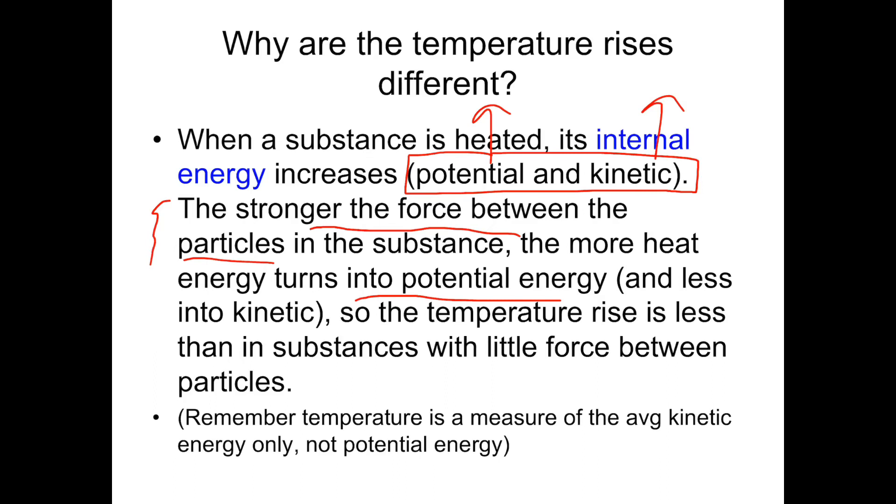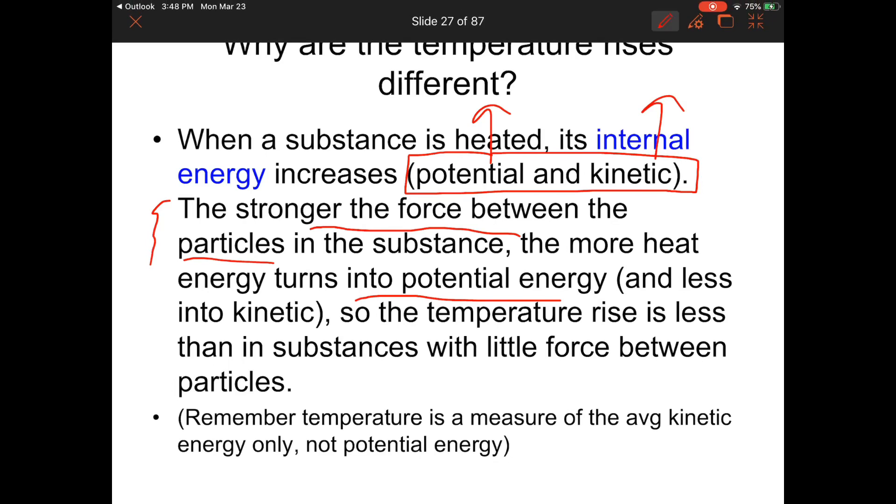For example, copper and brass are going to have different forces between the particles of that substance. Otherwise, everything would behave the exact same way, whether it was wood, metal, copper, plastic, etc. So when we have more energy turning into potential energy, that results in less kinetic energy, right? Think about that. If more energy is being converted into potential energy, that means we have less converted into kinetic energy. So what is temperature measuring exactly? Temperature only measures kinetic energy or the average kinetic energy. So in a substance where a lot of the energy input turns into potential energy, the kinetic energy doesn't increase as much. Therefore, the temperature rises less.